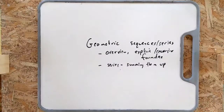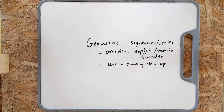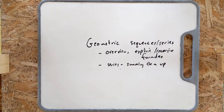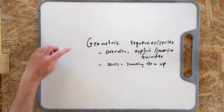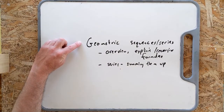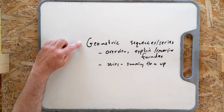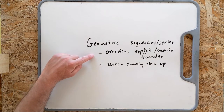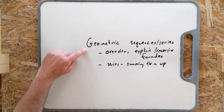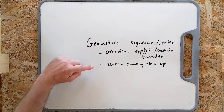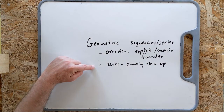Good afternoon. This is the third lesson in the sequencing series. This time we're going to focus on geometric sequences and series. Last time we did arithmetic — I'll compare them in just a moment. We're going to do two things: I'm going to give you an overview and review the explicit and recursive formulas for geometric sequences, just like we did for arithmetic ones. And then I'm going to go through adding them up for series, both infinite and finite.